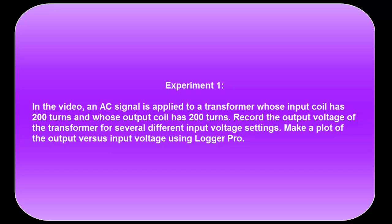In the following video, an AC signal is applied to a transformer whose input coil has 200 turns and whose output coil has 200 turns. Record the output voltage of the transformer for several different input voltage settings. Make a plot of the output versus input voltage using LoggerPro.